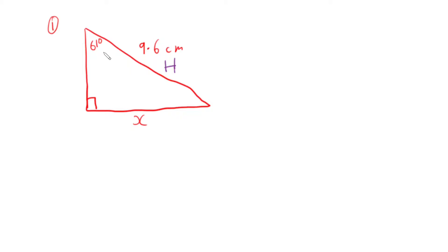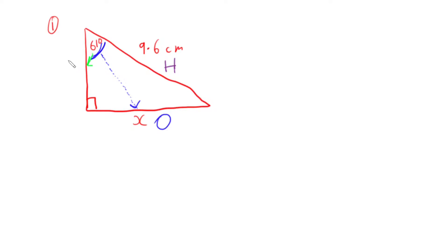The next side we label is the opposite. It's from the angle that's being given to us — the one we care about — going opposite all the way through the triangle to identify which side is opposite. And that leaves our last side, the adjacent side, which is immediately beside the angle.